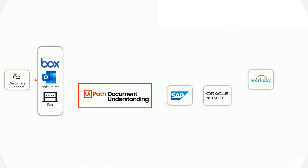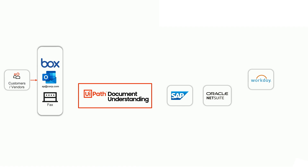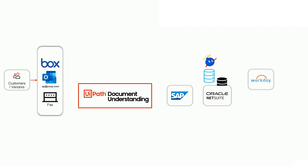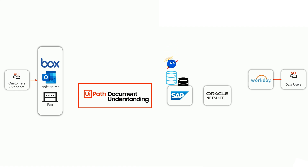Hello and welcome to the accounts payable three-way matching demo. This video will demonstrate a UiPath robot ingesting invoices from multiple sources, validating the invoice data against purchase orders in SAP, validating the invoice data against goods receipts in NetSuite, and finally inputting the data into Workday should the invoice pass both previous checks.